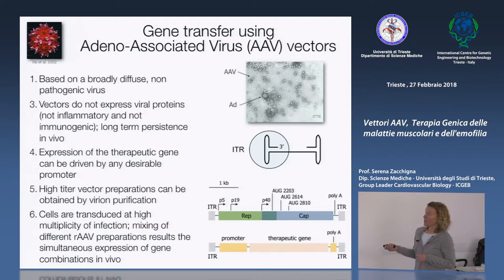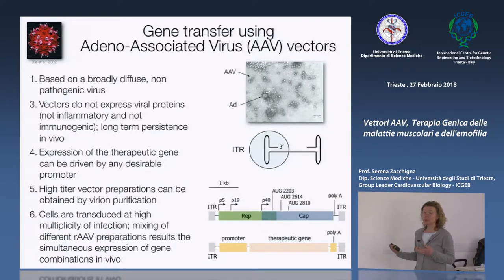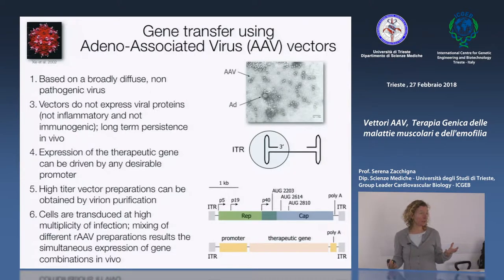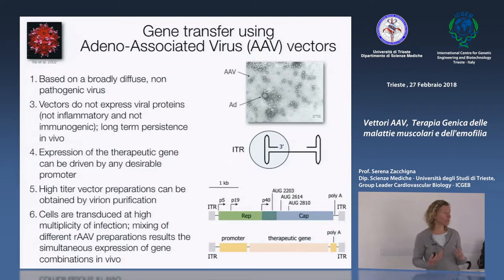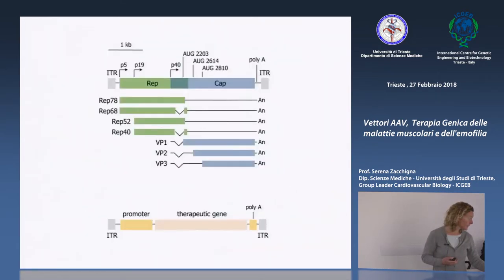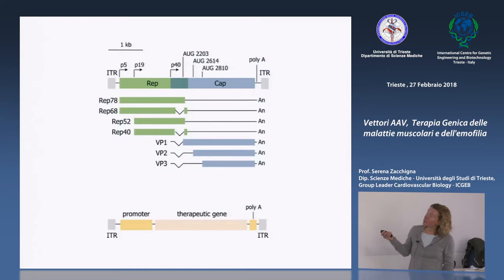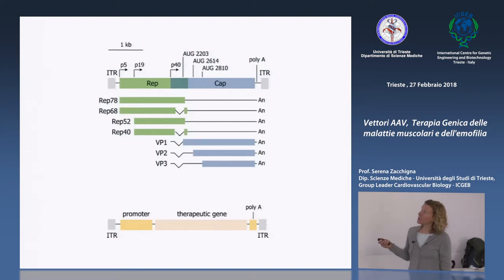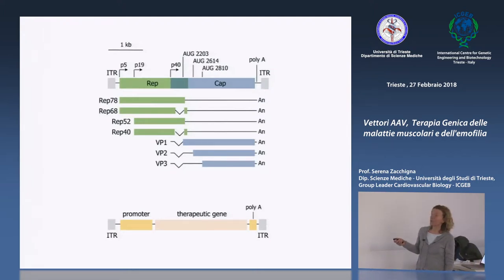Ci piacciono anche perché le preparazioni di vettore possono raggiungere titoli molto alti, rendendo possibile pensare di trasdurre tutta la massa muscolare di un organismo umano. I geni sono due — REP e CAP — ma grazie all'utilizzo di promotori e codoni di inizio diversi si producono diverse isoforme della proteina REP e diverse isoforme della proteina CAP, che collaborano sia nella replicazione virale che nella costituzione del capside.